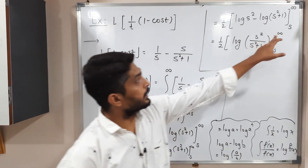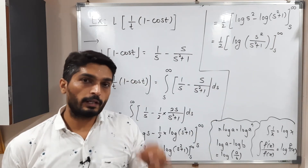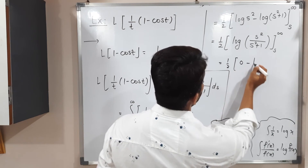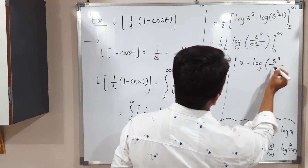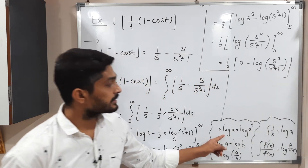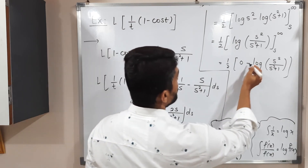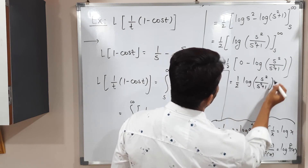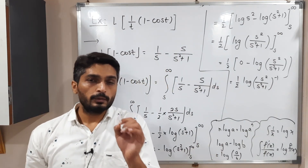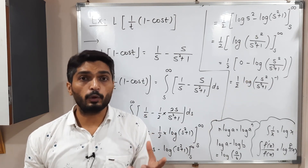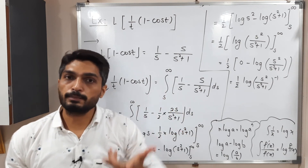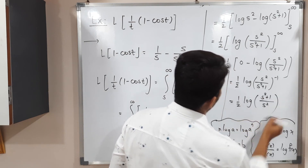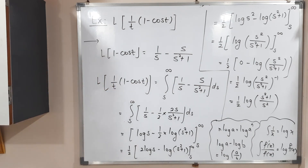Now we put the upper and lower limits. Putting the upper limit infinity gives infinity at numerator and denominator; by L'Hôpital's rule its value is zero. So we have zero minus log of S squared upon S squared plus one. Using the property that the minus one power flips numerator and denominator, we get one half log of S squared plus one upon S squared, which is the final answer. Thank you, bye.